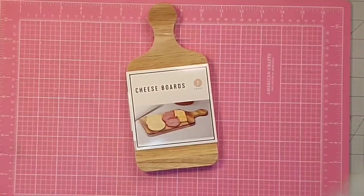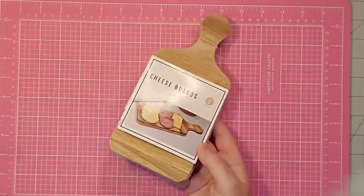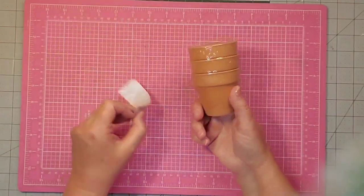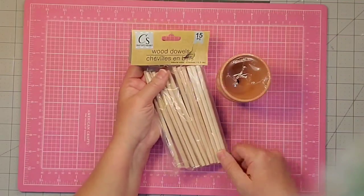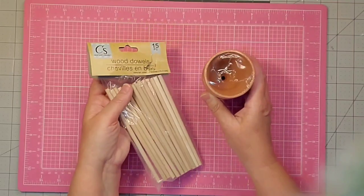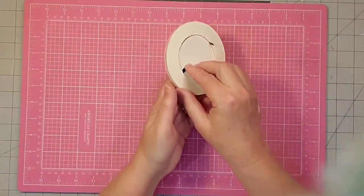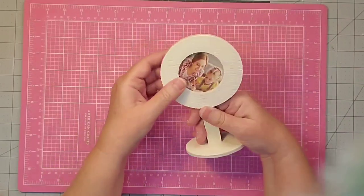I found these cutting boards at Target in the Dollar Spot for $5. I'm going to use one of these small pots from the Dollar Tree, a couple of wooden dowels, and this photo stand that has glazing points on the back.